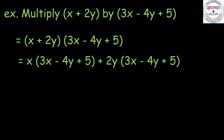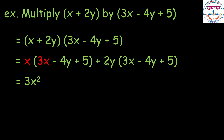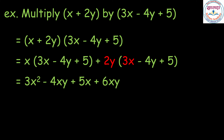Multiplying the terms: x into 3x is 3x square, minus x into 4y is 4xy, plus x into 5 is 5x, plus 2y into 3x is 6xy, minus 2y into 4y is 8y square, plus 2y into 5 is 10y.